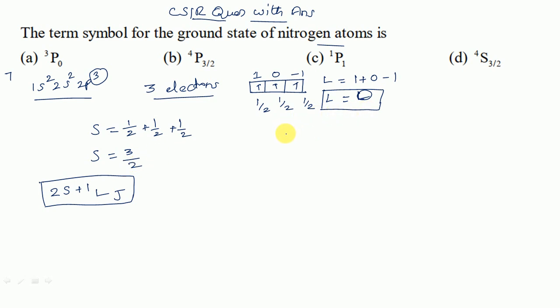What is J? J is the total angular momentum quantum number. So capital L plus capital S to capital L minus S, this is the formula.